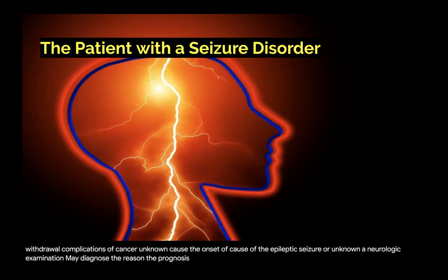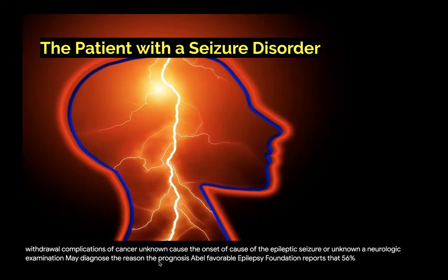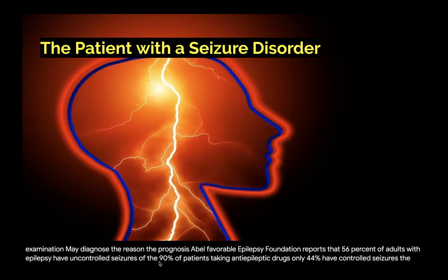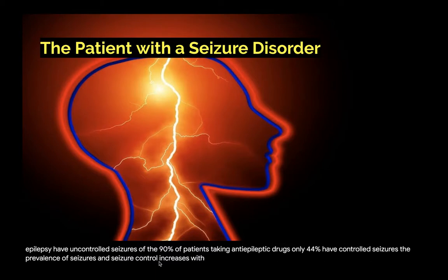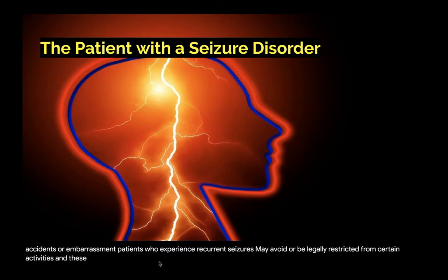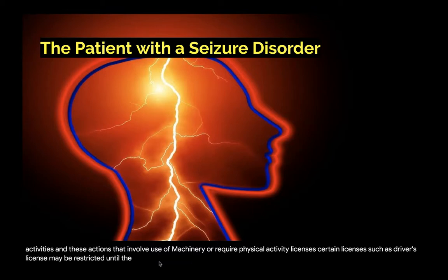Prognosis for seizure control is variable. The Epilepsy Foundation reports that 56% of adults with epilepsy have uncontrolled seizures; of the 90% taking anti-epileptic drugs, only 44% have controlled seizures. The prevalence of seizures and lack of seizure control increases with low family income. Due to the possibility of severe injury, accidents, or embarrassment, patients with recurrent seizures may be restricted from certain activities such as vocations involving machinery, and certain licenses such as a driver's license may be restricted until the patient is seizure-free. Assisted living may be advised for independent living.